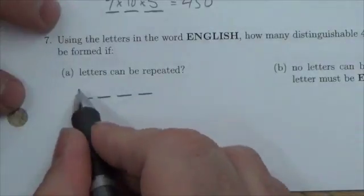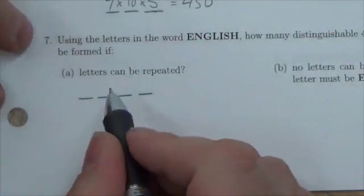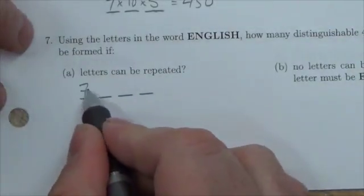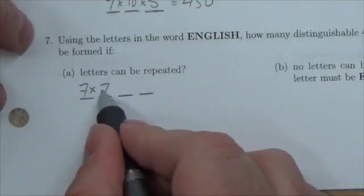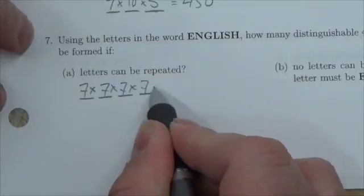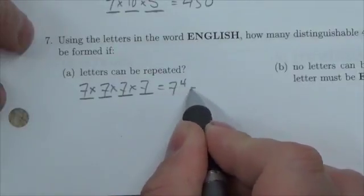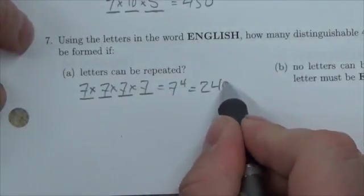How many different ways can I do this? Well, how many options do I have for the first letter? The answer is there are seven. There are seven letters in the word English. And because I can repeat them, I get seven and then seven and then seven. So seven to the four or 2,401.